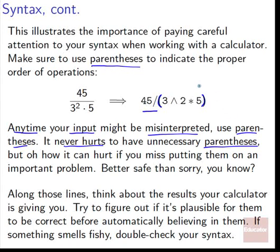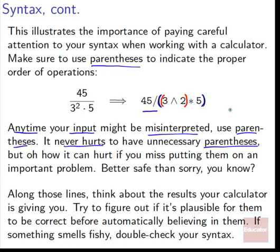For example, with 3 caret 2 times 5, we might worry the calculator will interpret it as 3 to the exponent (2 times 5), so 3 to the 10th. So we might want to put 3 caret 2 in parentheses and then multiply by 5, with that whole thing in parentheses, and divide 45 by that. As you work more with your calculator, you'll start to understand exactly how the syntax works and realize it only interprets the very next thing as the exponent, so you'll be safe with just 3 caret 2 times 5. But it takes a while to figure that out, so more parentheses are always a good thing when you're not sure.